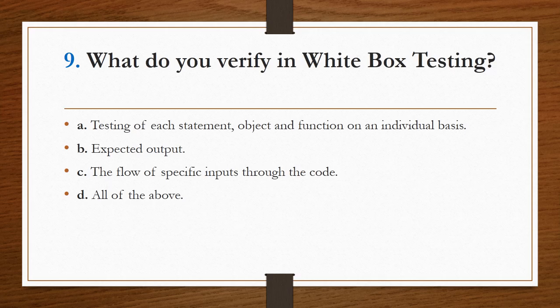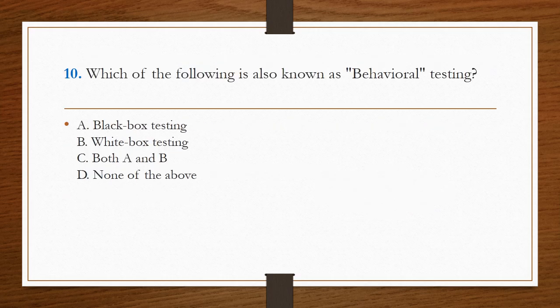What do you verify in white box testing? Options are: testing of each statement, object, and function on an individual basis; expected output; the flow of specific inputs through the code; or all of the above. All of the above is the right answer.